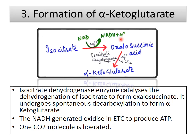This NADH will go to the electron transport chain, where it will synthesize 2.5 ATP (previously calculated as 3 ATP). NAD+ is converted to NADH and via the electron transport chain it synthesizes ATP. The oxalosuccinic acid then removes 1 CO2 and is converted to alpha-ketoglutarate — so this 6-carbon compound becomes a 5-carbon compound, losing 1 CO2. The enzyme is isocitrate dehydrogenase.